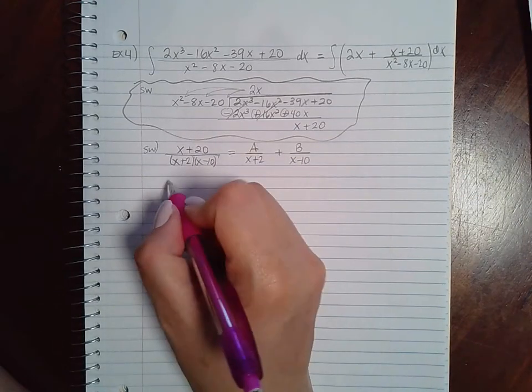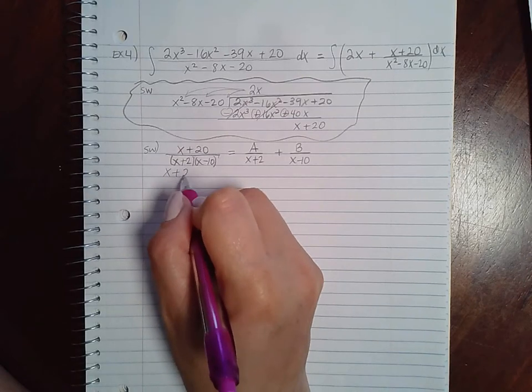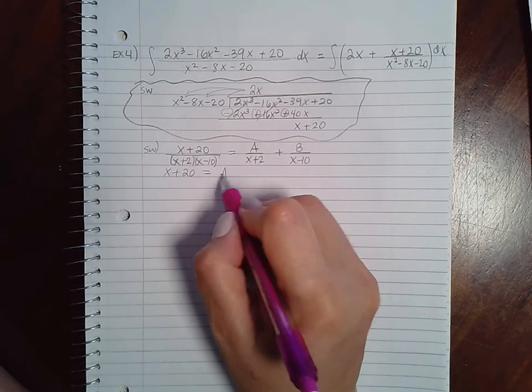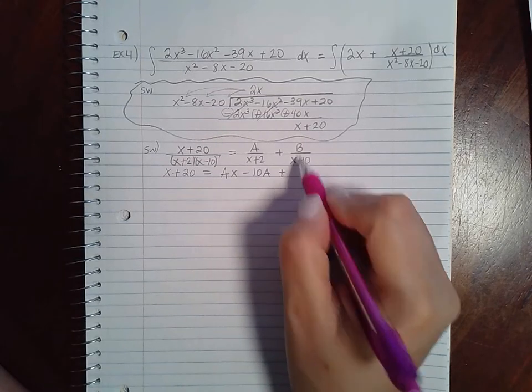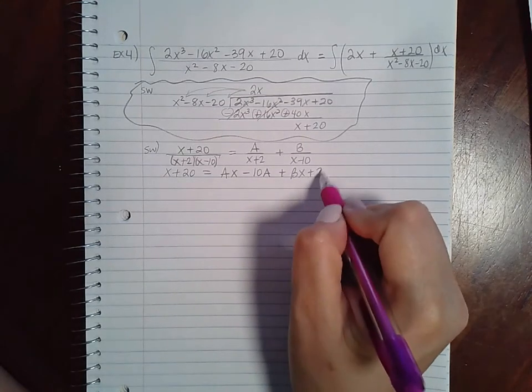And if we multiply both sides by the common denominator, both will cancel on the left. Here I'll end up with ax minus 10a, and here I'll end up with bx plus 2b.